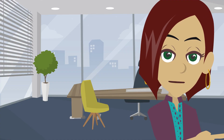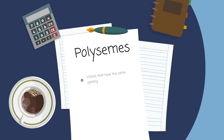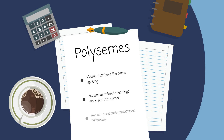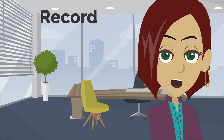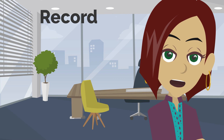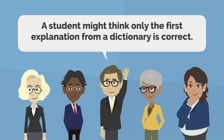Through practice of speaking and knowledge of writing, these words become easier to learn. Another grouping that causes great confusion to new learners of English are polysemes, which are words that have the same spelling but numerous related meanings when put into context. Unlike homographs, they are not necessarily pronounced differently. Let's look at the word 'record' — if you looked it up in a dictionary and read the first example, it may be described as a plastic disc you listen to music from.